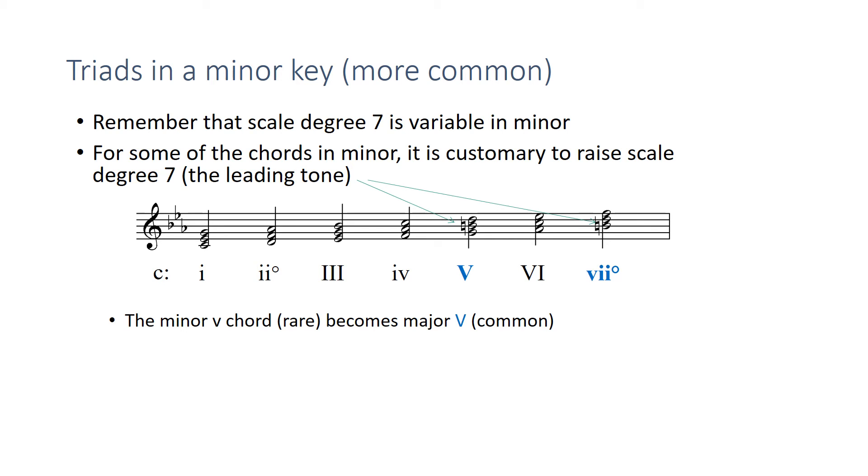So the minor five chord, which we had naturally, now becomes a major five, which is much more common. Ninety-five percent of the time you will see it as a major dominant chord. And the major seven chord, which we saw previously, which is also rare, becomes a seven diminished chord, which is now common.